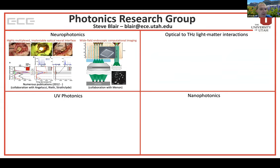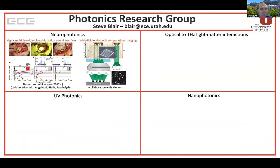On the imaging side, we're taking advantage of the fact that this whole process can be reversed — we can collect light and images through that same array of waveguides. This is a project with Professor Menon, taking his work in computational microendoscopy and translating that into doing wide-field endoscopic imaging in the brain, where each optical waveguide can generate a fluorescence image of activity in the brain. We then produce a composite image by combining all those individual images, all done via training of convolutional neural networks.